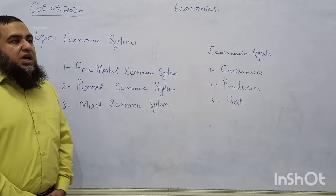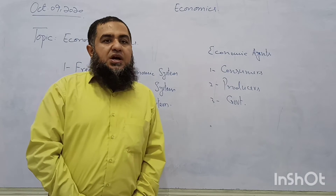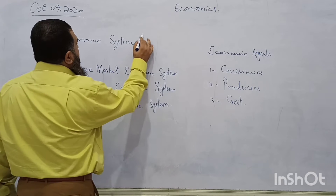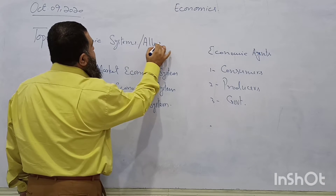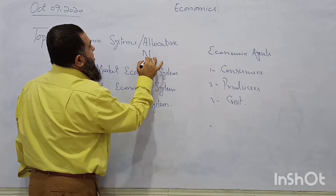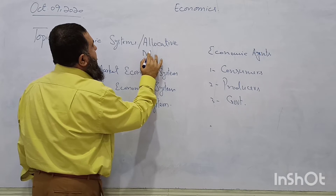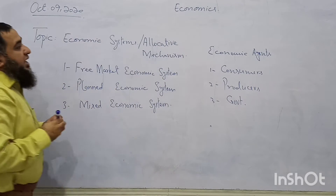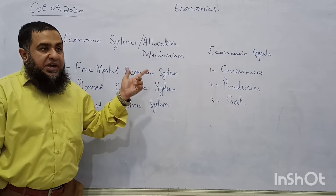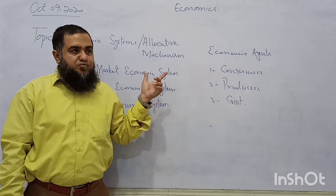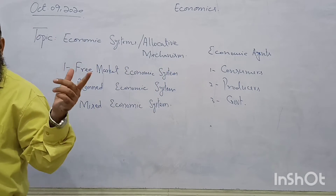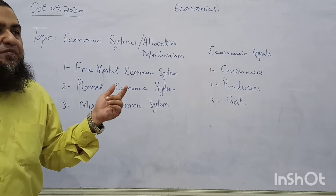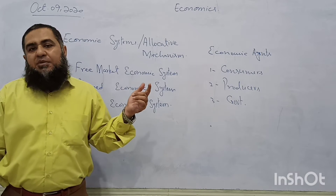These economic systems are also given another name — they are called allocative mechanisms. What do we mean by this? These economic systems are going to allocate scarce resources — land, labour, capital — in order to produce goods and services to overcome the basic economic problem of scarcity.